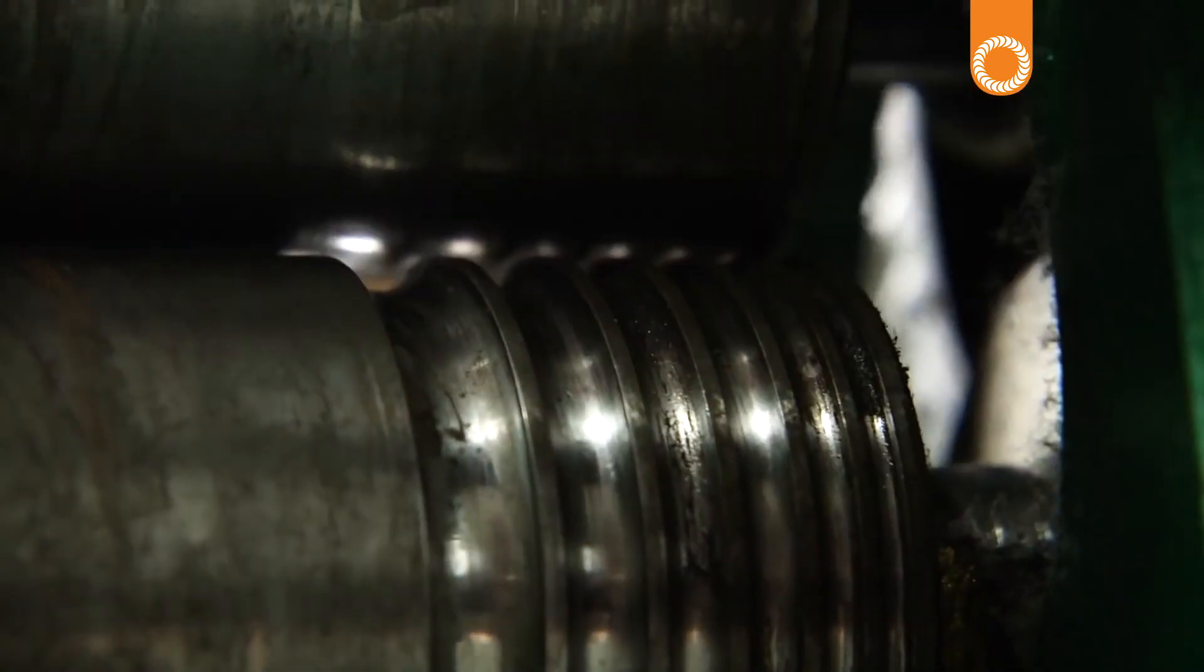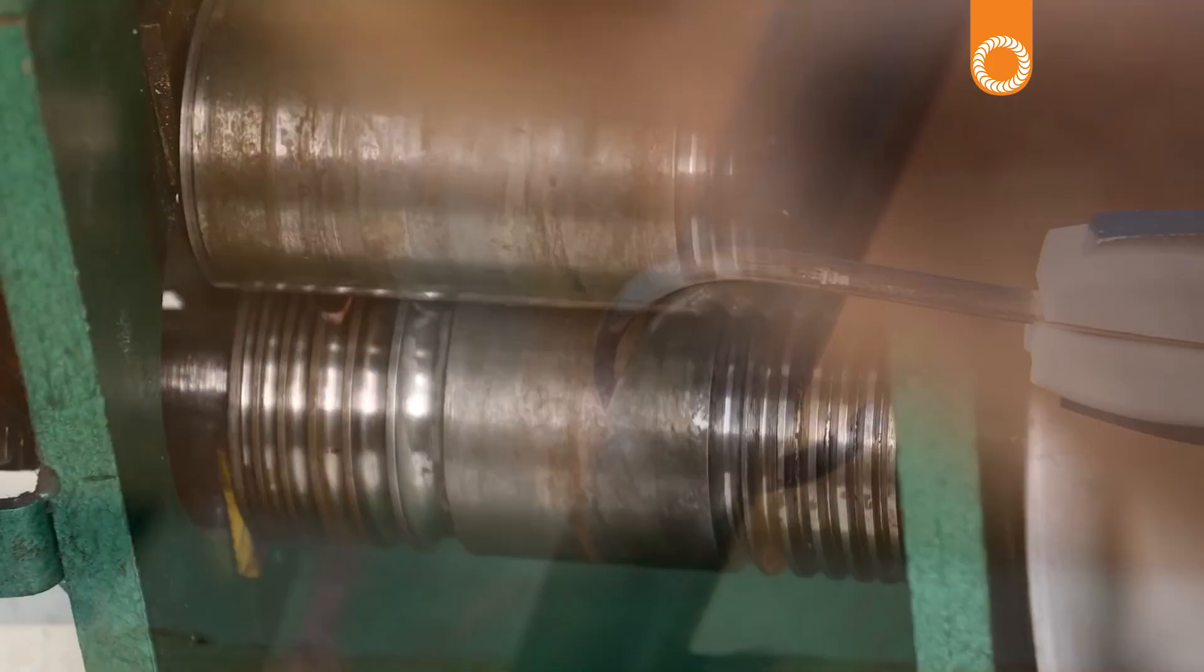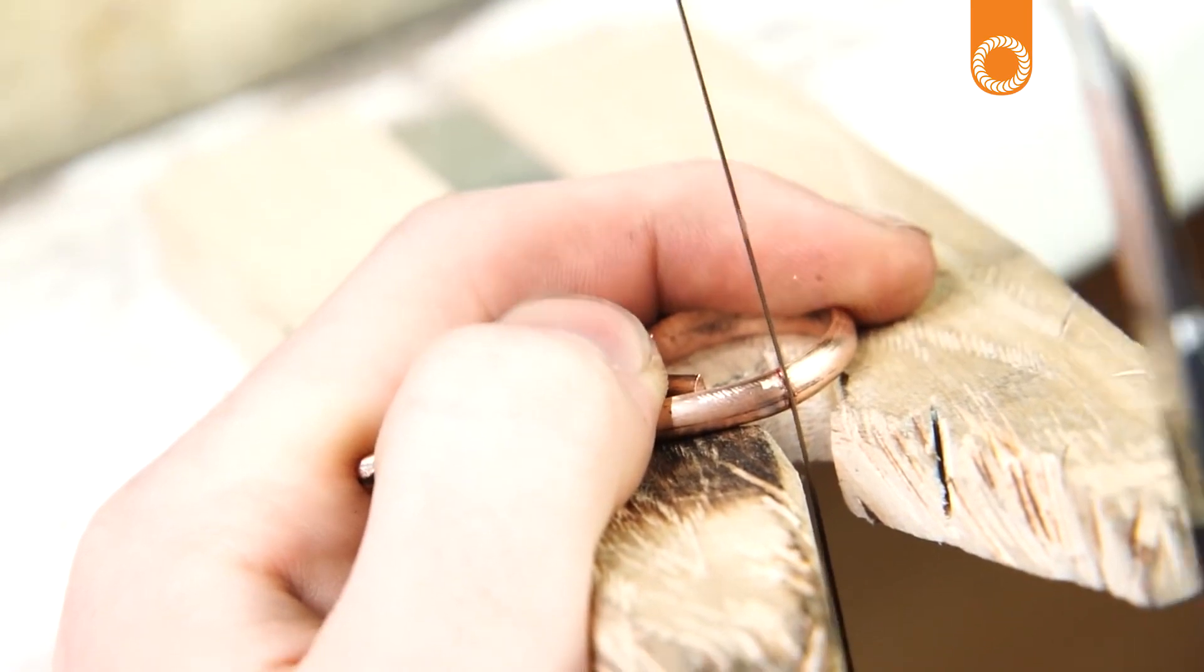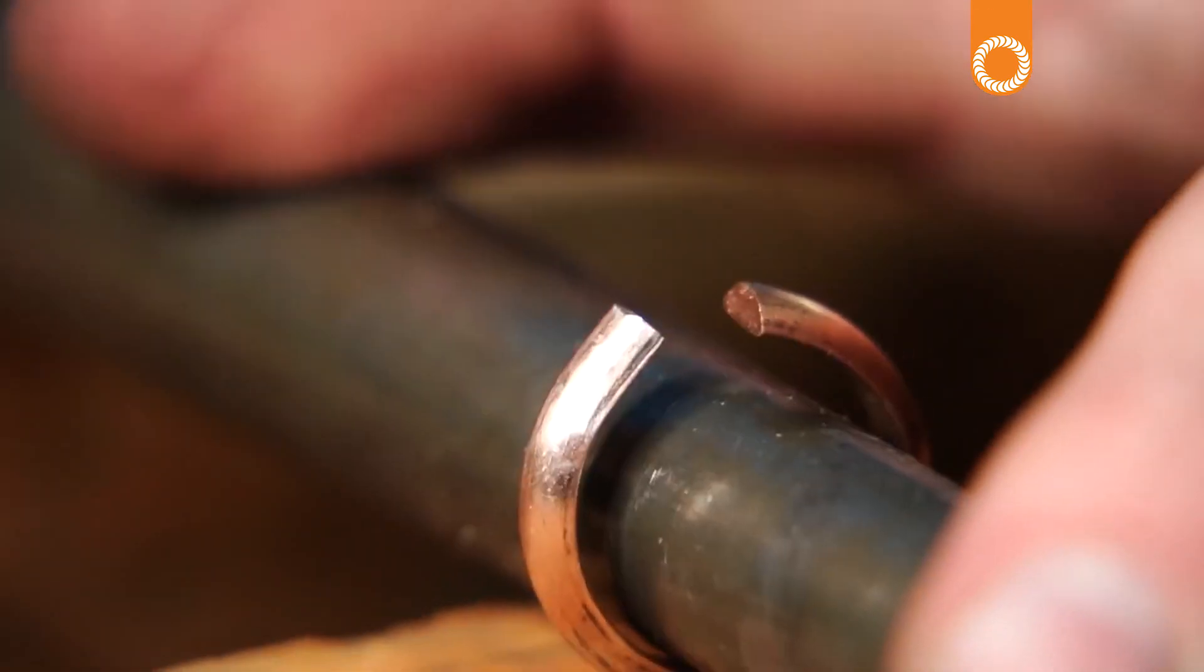I've got the circular shape where I want it. I'm going to trim off the excess rose gold and then take it over to the laser welder to get this thing connected.